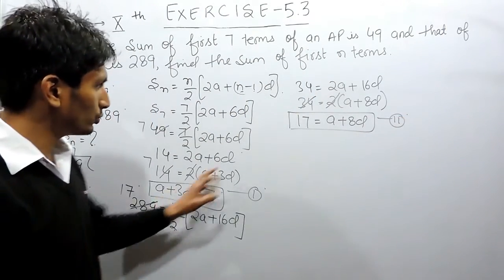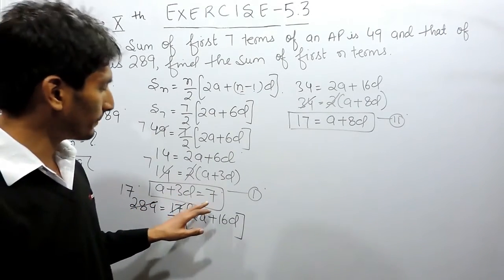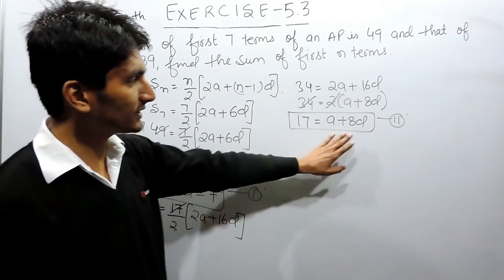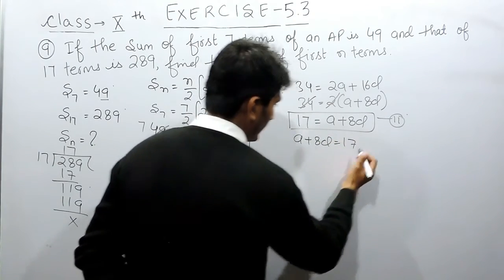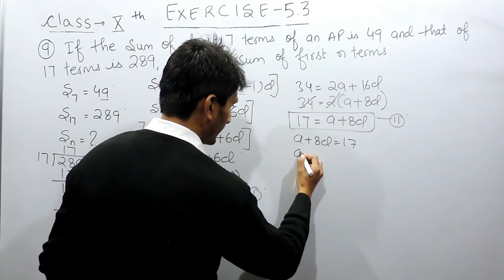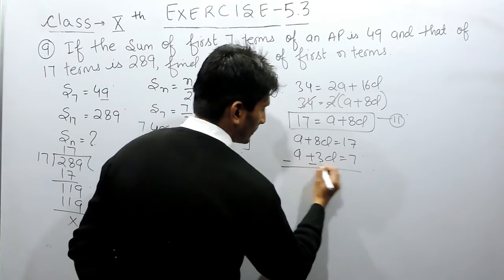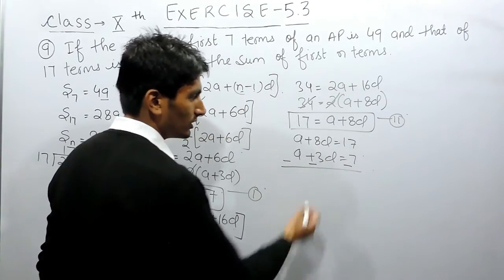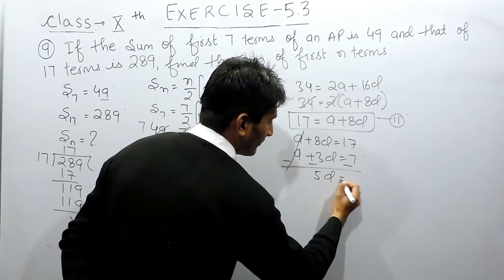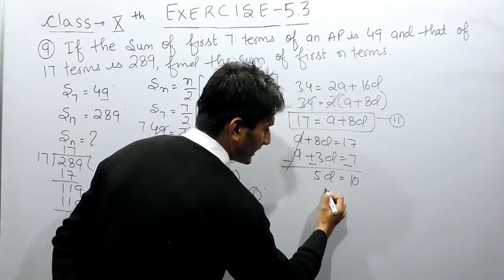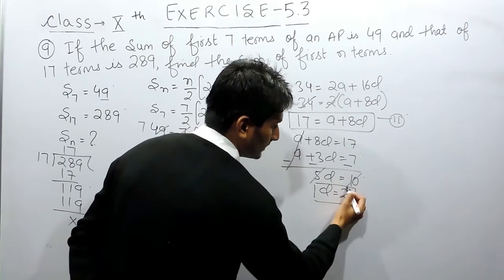Now, solving these two equations, I subtract the first equation from the second. The second equation is A plus 8D equals 17, and the first is A plus 3D equals 7. Subtracting, the A terms cancel, and 8D minus 3D gives 5D equals 10.